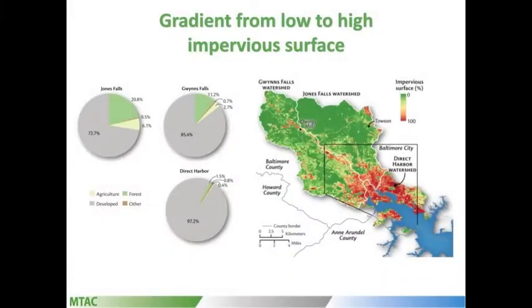This is also reflected in the land use. The direct harbor has almost 100% developed land, whereas you can see the Jones Falls actually has some forest and agriculture as well.